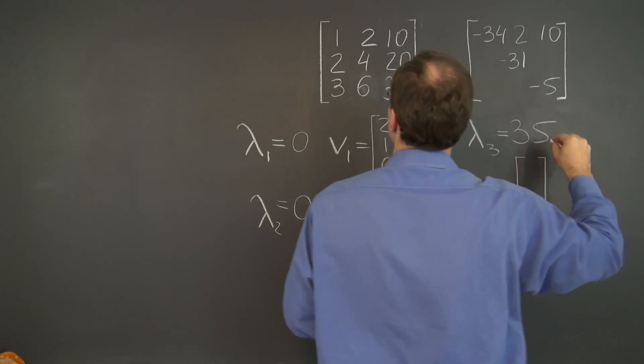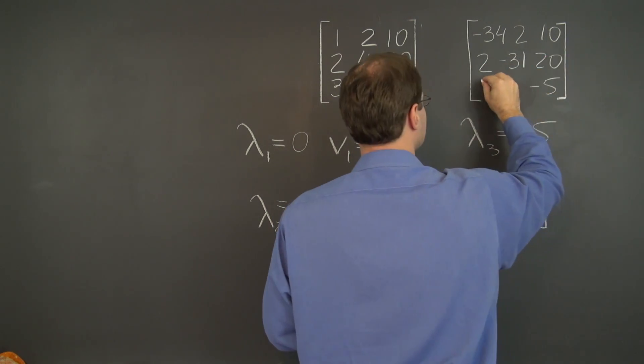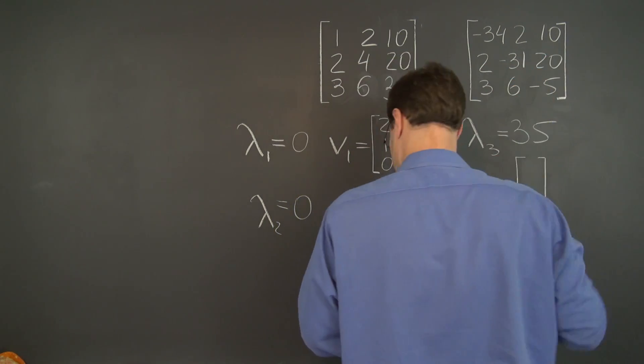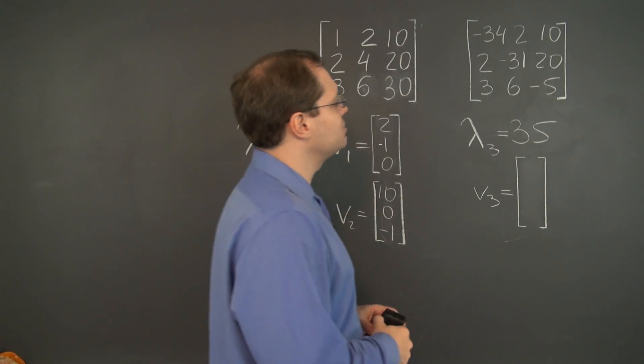All right, let's fill in the remaining entries: 2, 10, 2, 20, and 3, 6. All right, let's see if we can guess the null space. I certainly don't see it.